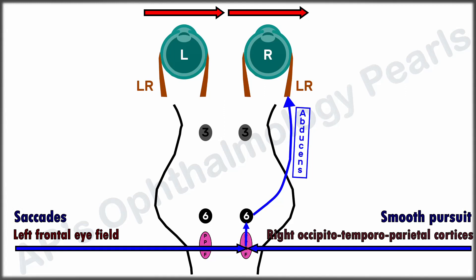The abducens nucleus also contains smaller interneurons that project to the contralateral medial rectus subnucleus of the oculomotor nuclear complex through the medial longitudinal fasciculus. From the oculomotor nucleus, the impulses are carried to the left medial rectus via the left oculomotor nerve, thus producing right conjugate gaze.